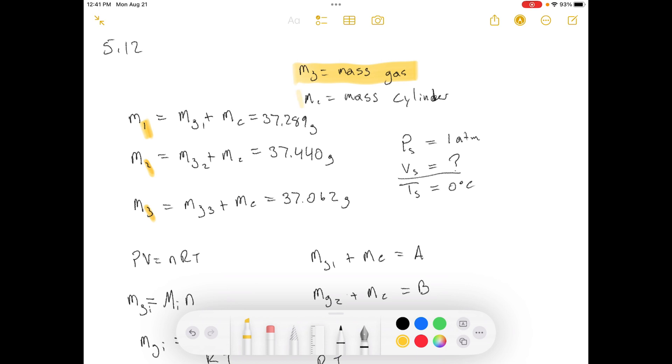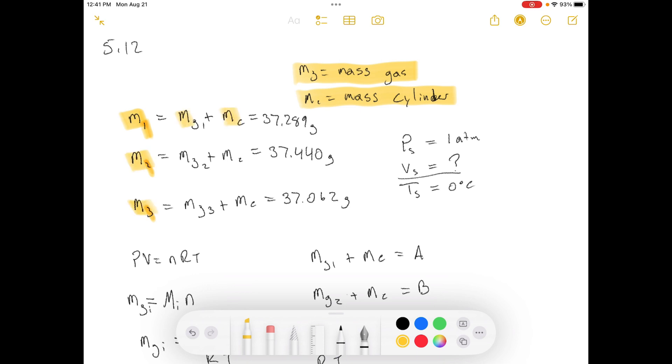Mg stands for the mass of the gas, and Mc stands for the mass of the cylinder. So all the masses they gave to us are a combination of the mass of the gas plus the mass of the cylinder. We know that standard temperature is at one atmosphere. There isn't a standard volume unless you have a standard amount of moles or a standard amount of materials that you're starting with, in which case there is a standard volume if you have the amount of material known. Otherwise, standard temperature and pressure just refers to the pressure and the temperature, not the volume.